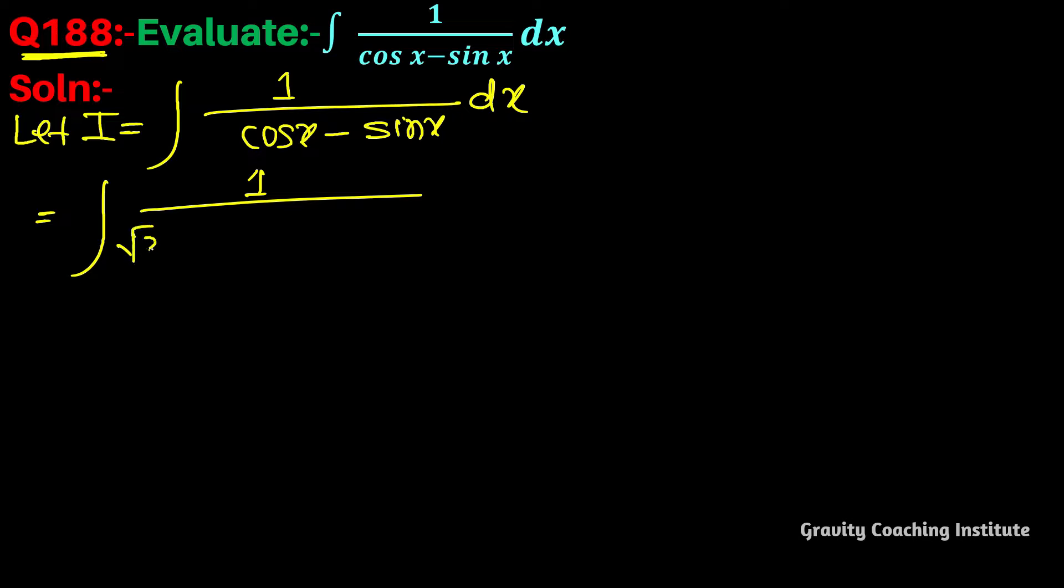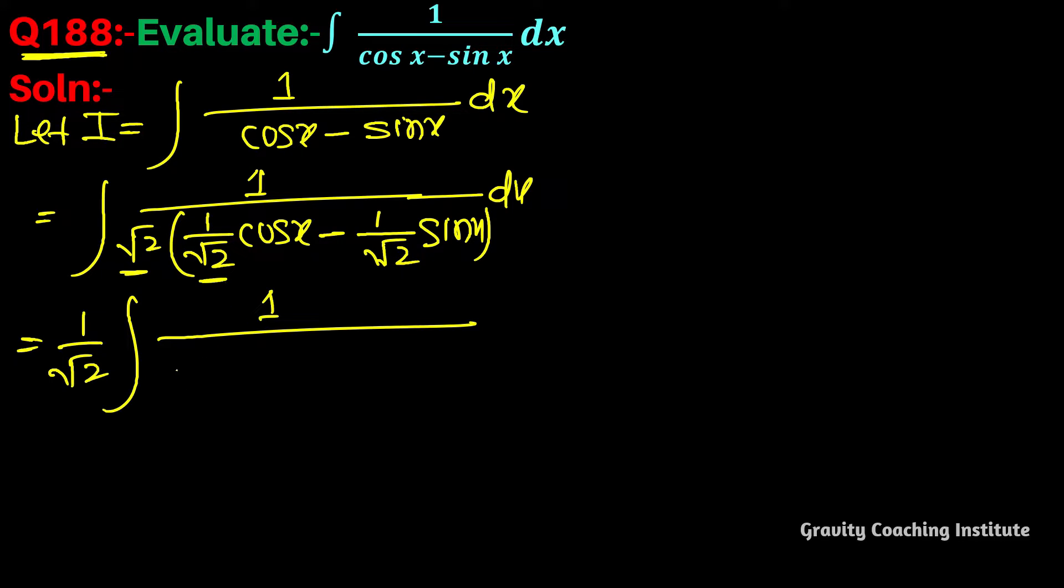We write this as root 2 into 1 upon root 2 cos x minus 1 upon root 2 sin x dx. We take this root 2 outside the integration, and write this 1 by root 2 as sin pi upon 4, and this 1 upon root 2 as cos pi upon 4.